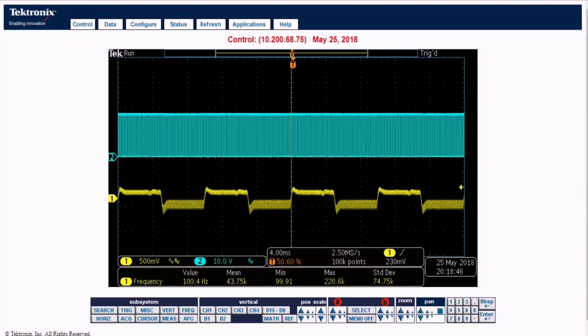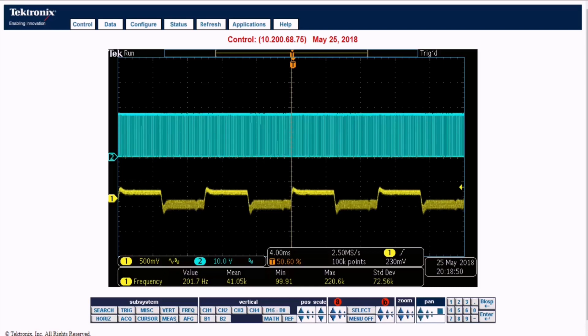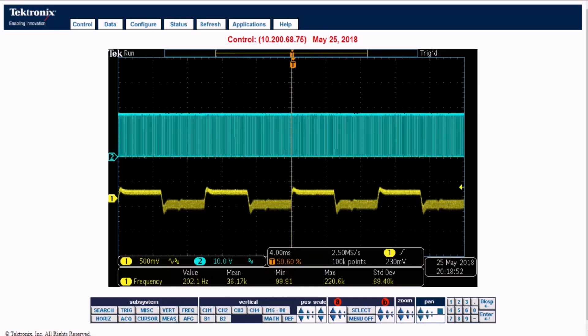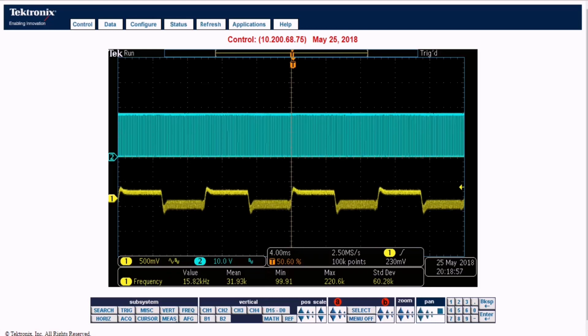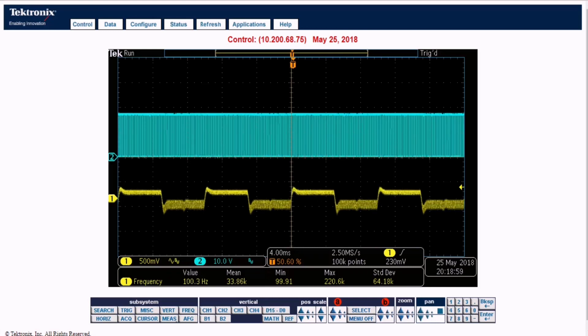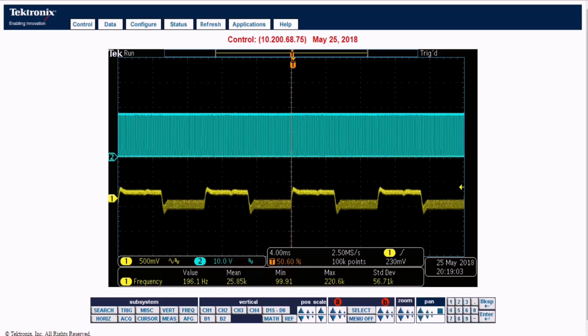Now I am introducing a 50% load step at the output where load current is increased from 50 milliamps to 100 milliamps at a frequency of 100 hertz. Here you can see a damped, well-stable output voltage response where voltage is being regulated by regulating the voltage at the primary side capacitor.